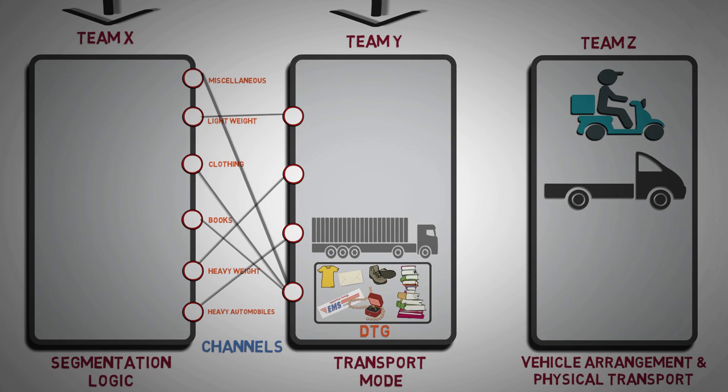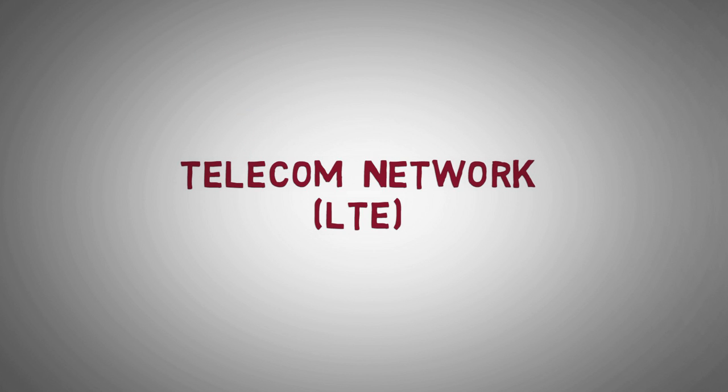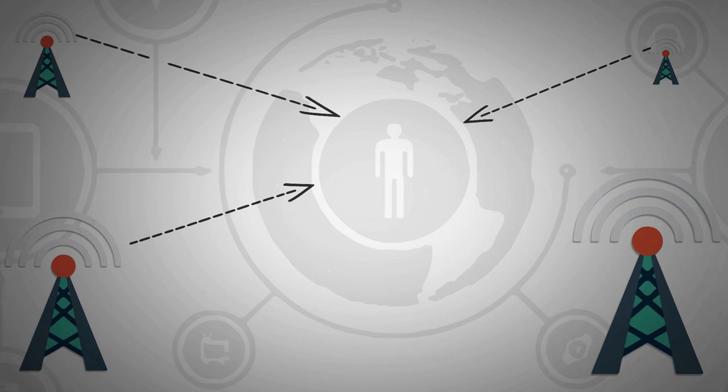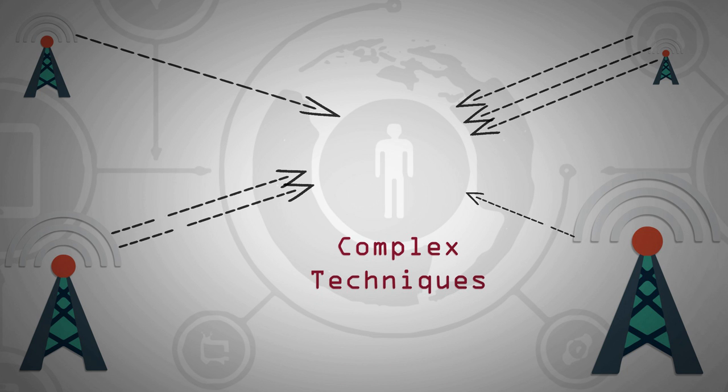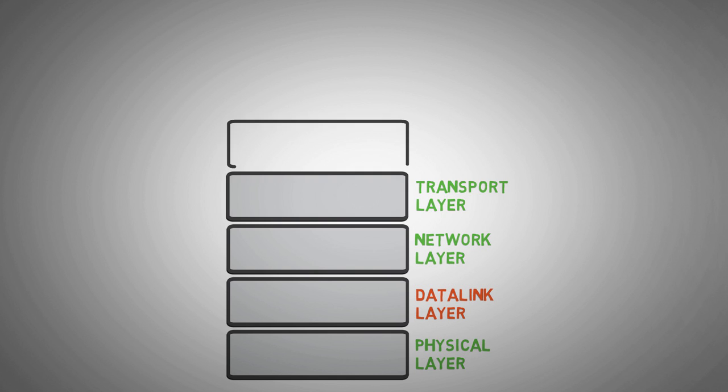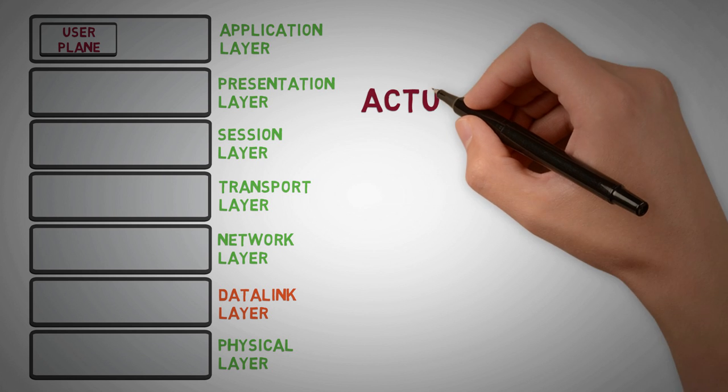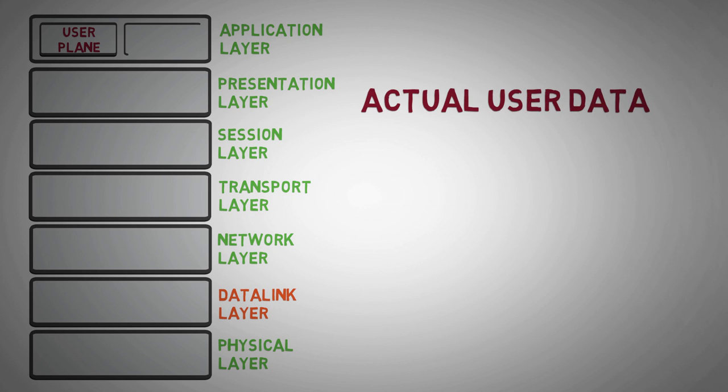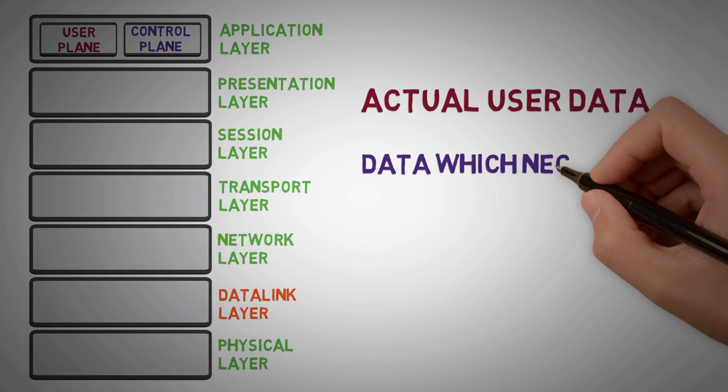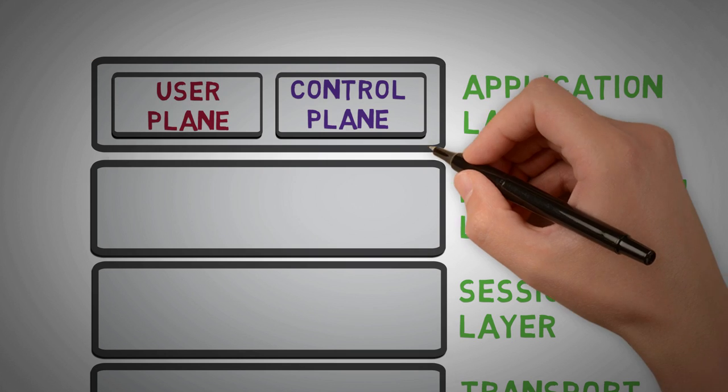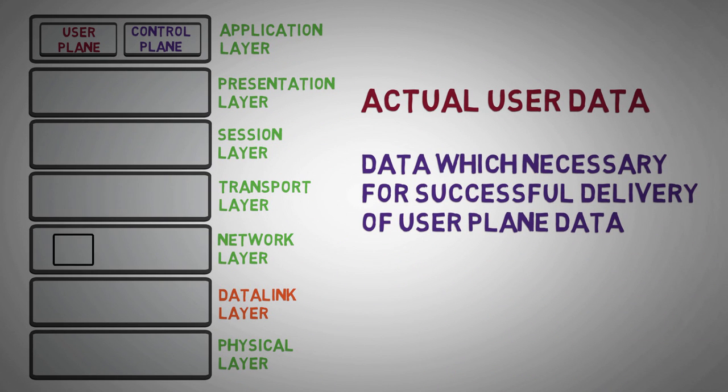Now, let us understand how similar concept is implemented in telecom network. As we said earlier, telecom operator has to deliver data to the users using complex techniques. These data can be classified on application layer as user plane data, which is actual data intended for user. Control plane data, the data which are necessary for successful delivery of user plane data. These control plane and user plane data are further classified for efficient delivery, which is similar to the role of team X in real life example.